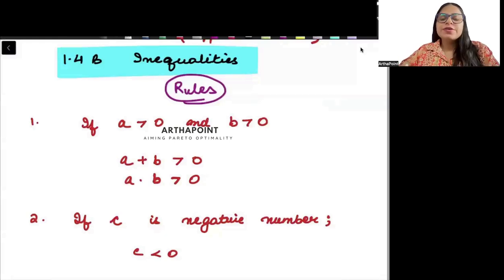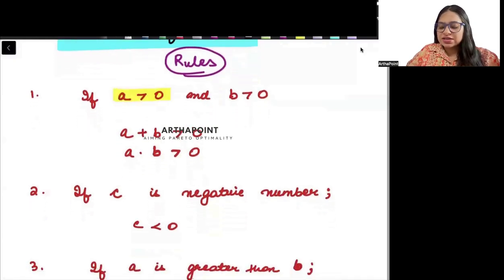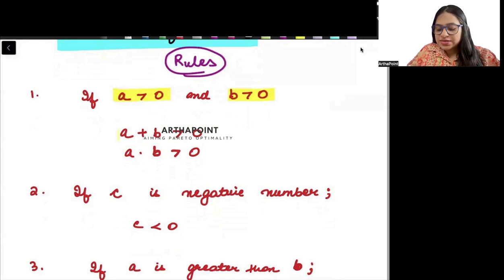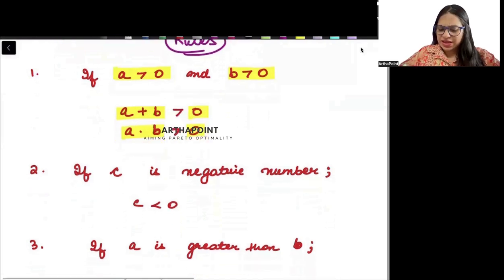The first rule is that if a is greater than 0 and b is greater than 0, then a plus b will be greater than 0 and a into b will also be greater than 0.